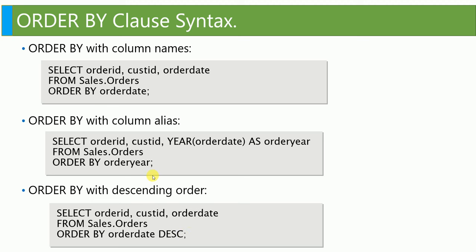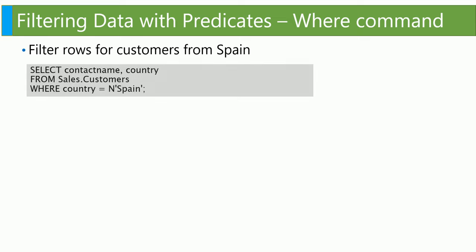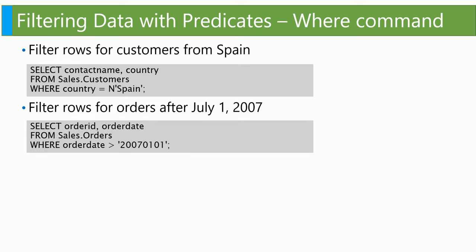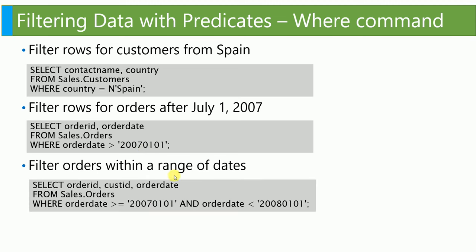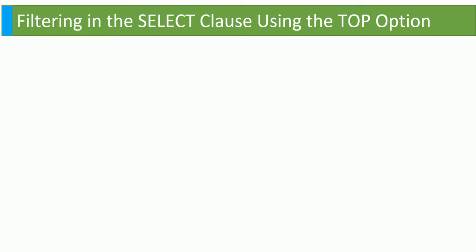Now let's go to the WHERE command — I already explained this in my last video as well. You can use SELECT with WHERE equal to a name or whatever you need, then filter data where the order date is greater than a particular value. You can also give a date range using less than or equal to. You can use predicates like equal to, greater than, less than, or not equal to.